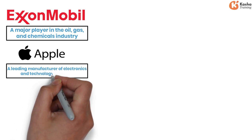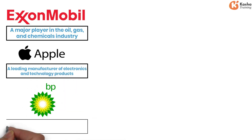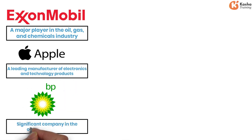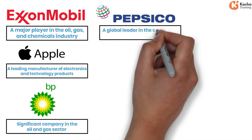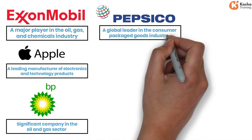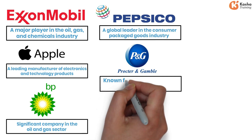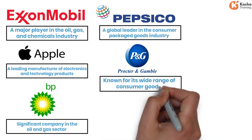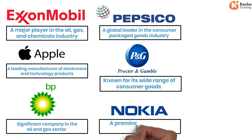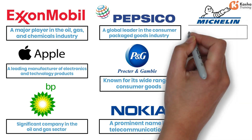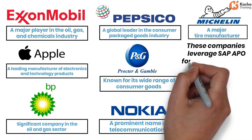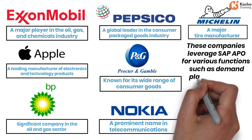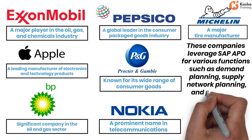Other notable companies include BP, another significant company in the oil and gas sector; PepsiCo, a global leader in the consumer packaged goods industry; Procter and Gamble, known for its wide range of consumer goods; Nokia, a prominent name in telecommunications; and Michelin, a major tire manufacturer. These companies leverage SAP APO for demand planning, supply network planning, and production scheduling.